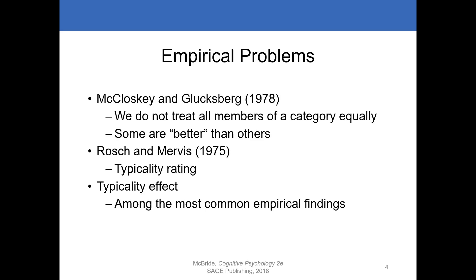We can also look at empirical findings that suggest the classical view of concepts as definitions is incorrect. One characteristic of the definition approach is that it determines whether something is part of a category, but once something is determined to be a categorical member, it makes no distinctions between members themselves. Researchers — Mikulski and his colleague — demonstrated that categorical boundaries are not always clear cut. They presented participants with pairs of words, the second being a category name, and the participant's task was to quickly judge whether the first word was a member of that category. For example: dog / mammal — the participant should indicate yes.